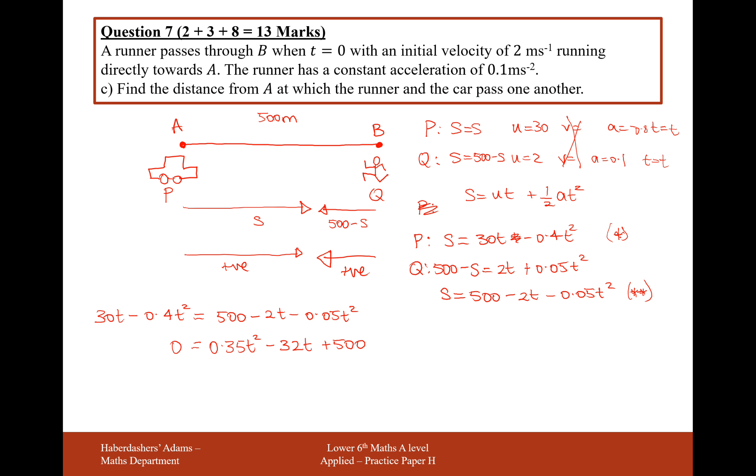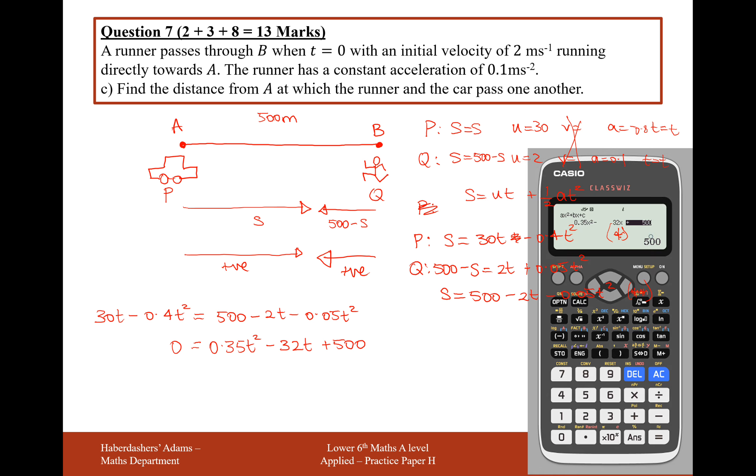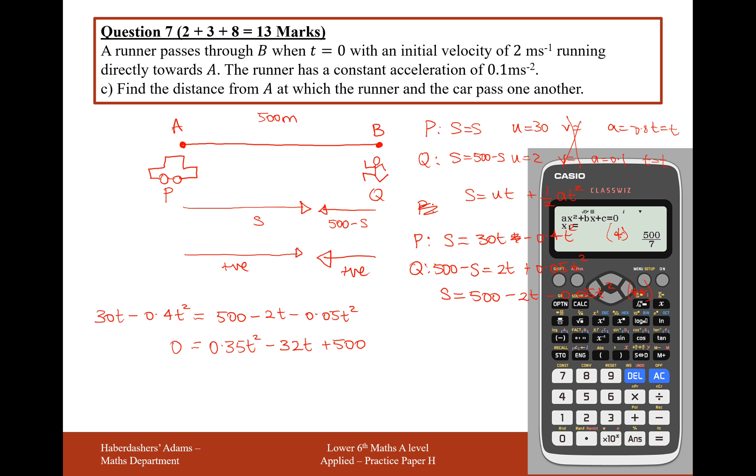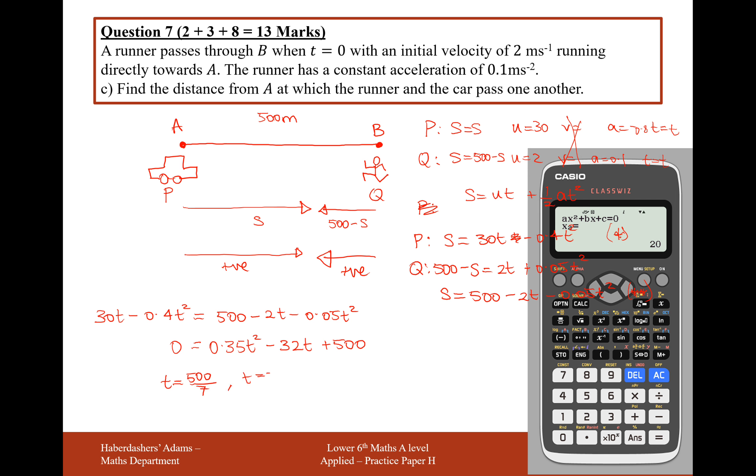What we need to do is whip out that quadratic equation solver on our calculator, and we're going to get the first solution of 500 over 7, and the second solution of T equals 20. Doing 500 over 7, we get 71.42. If you remember back to the initial point, T was between 0 to 25, so we're going to abandon this solution for T. What we're going to use is T equals 20.